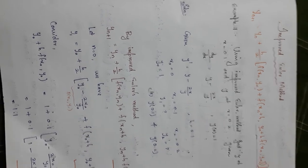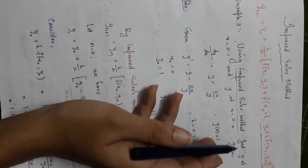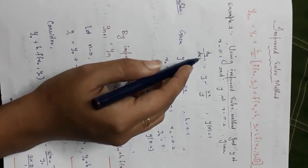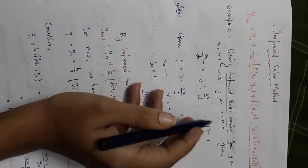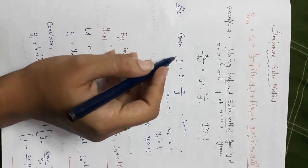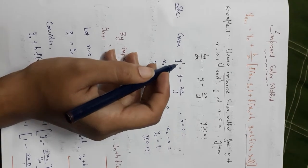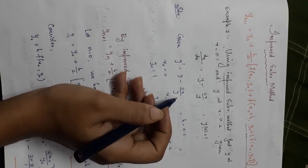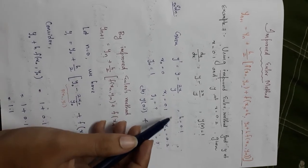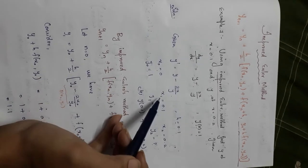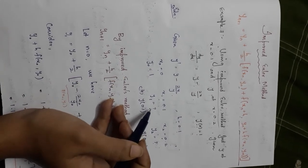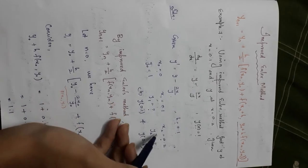The first question: using the improved Euler method, find y at x = 0.1 and y at x = 0.2, given dy/dx = (y - 2x)/y, and y(0) = 1. So h = 0.1, x₀ = 0, x₁ = 0.1, x₂ = 0.2. We need to find y₁ = y(0.1) and y₂ = y(0.2).